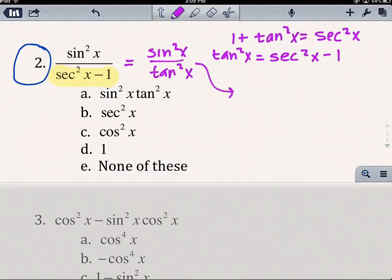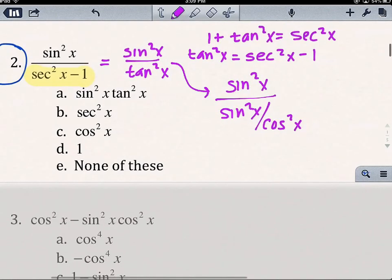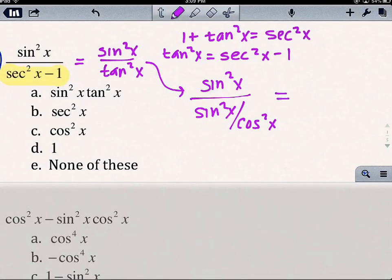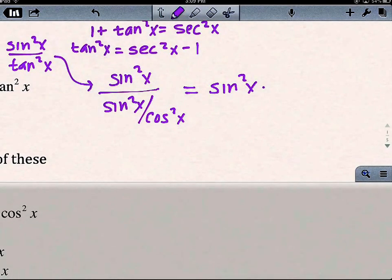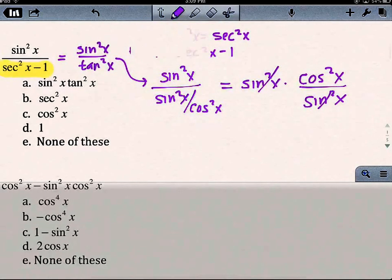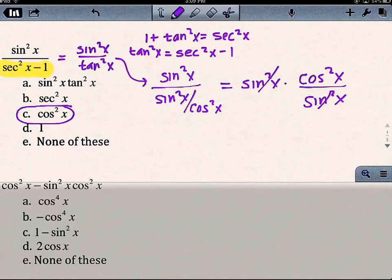Now I want to go ahead and simplify this further. I know another way that I can write tangent is sin/cos. So I'm going to think of this as sin²x divided by sin²x/cos²x. I know when I'm dividing by a fraction, I multiply by the reciprocal. So my sin²x cancel each other out, and I am just left with cos²x.